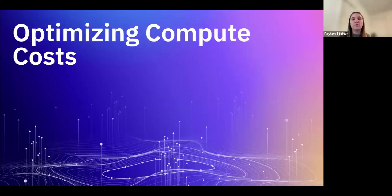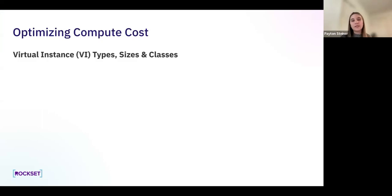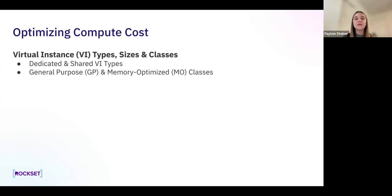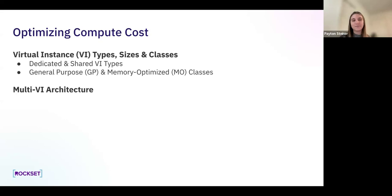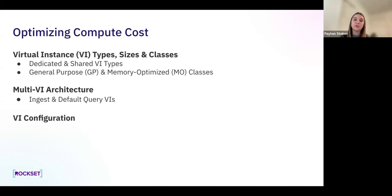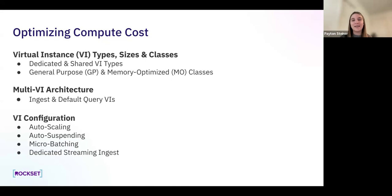Now we're going to dive into optimizing compute costs. We're going to talk about virtual instance types, sizes, and classes. The different VI types are dedicated and shared, each with their own subset of sizes. We'll then talk about the different classes: general purpose and memory optimized. We're then going to go over a multi-virtual instance architecture, highlighting both ingest and default query VIs. And lastly, we'll cover virtual instance configuration options including auto-scaling, auto-suspending, micro-batching, and dedicated streaming ingest.